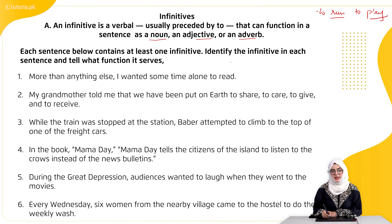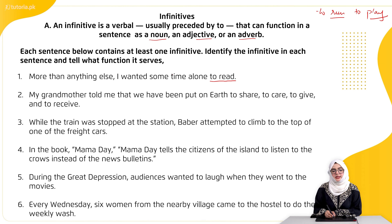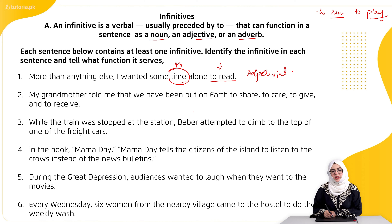So let's begin. Each sentence below contains at least one infinitive — identify the infinitive and tell what function it serves in the sentence, either as a noun, adjective, or adverb. First: 'More than anything else, I wanted some time alone to read.' Yahan 'to read' infinitive hai. 'Time' jo hai noun hai — time kyun chahiye? Parhne ke liye. So 'to read' is acting as an adjective, describing the noun 'time.'